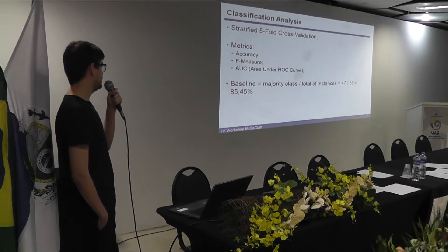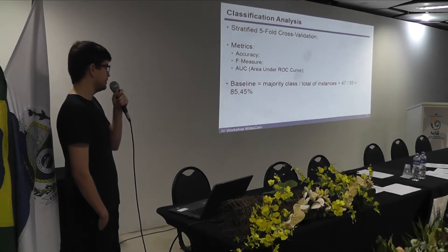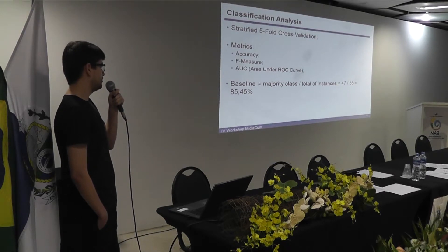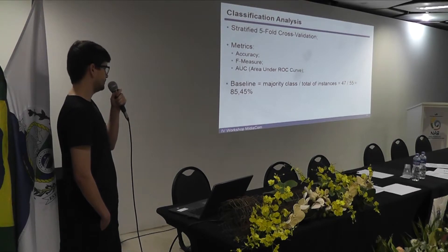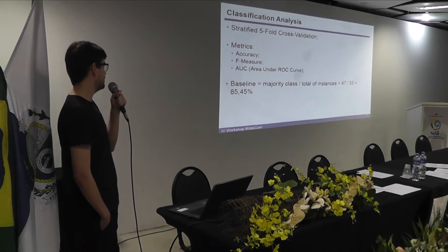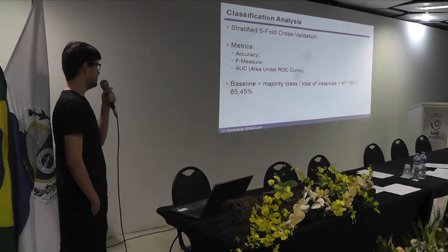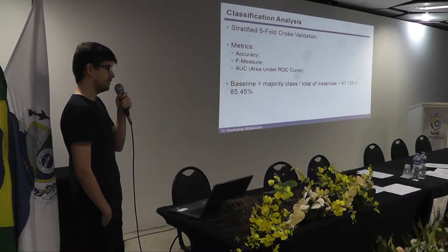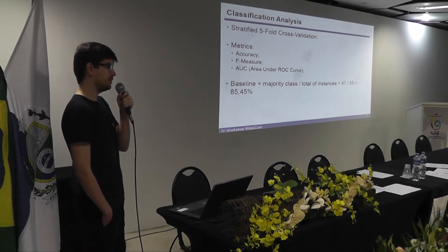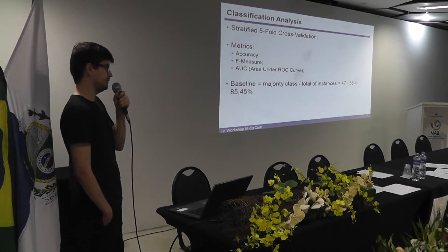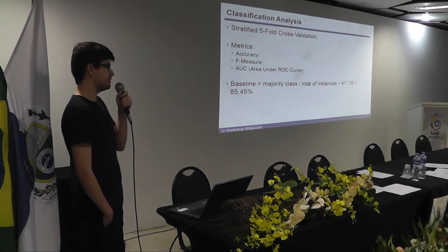An important thing to note is the baseline. In our scenario, the baseline consists of dividing the majority class by the total number of instances. Our majority class — the low PCL — has 47 instances, and the dataset has 55 instances, giving us a baseline of 85.45%. The baseline means that the classifier correctly classifies all instances of the majority class, and what we want is to get an accuracy higher than the baseline — meaning the classifier started to correctly classify some instances of the minority class.